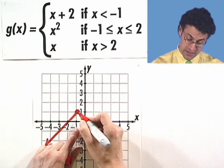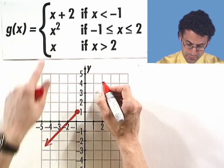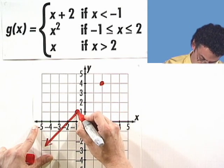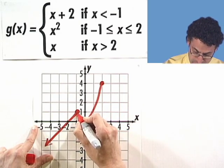I fill in the hole because of this piece, and I graph a little parabola that goes all the way to 2. And when x equals 2, we know that the value of the function is going to be 4, and I include that point. So I put in a little happy face parabola.